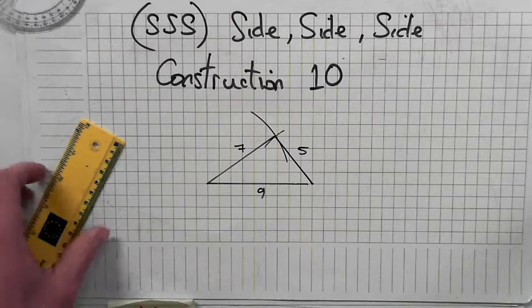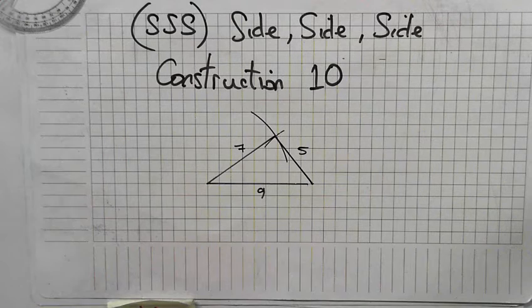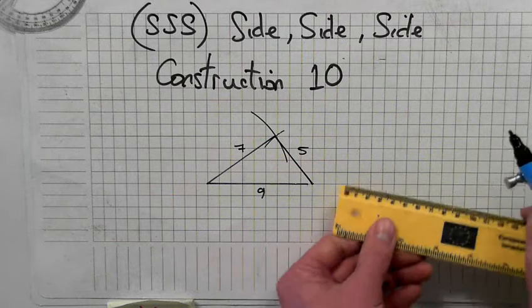Right, I'll do another one. Give me another triangle of different lengths. Three, four, five is the common one that builders use. So we'll do five first.